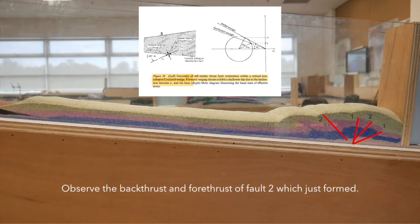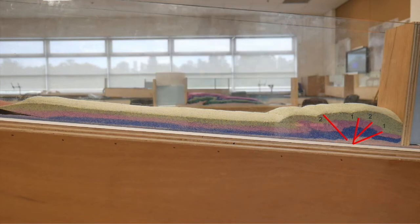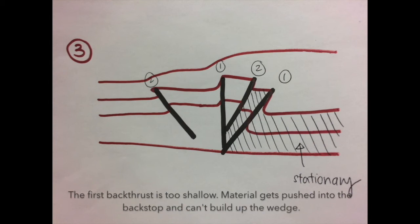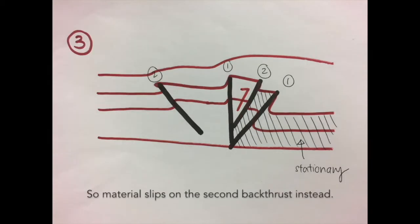Observe the backthrust and forethrust of fault 2 which just formed. Next, the first backthrust is too shallow. Material gets pushed into the backstop and can't build up the wedge. So material slips on the second backthrust instead.